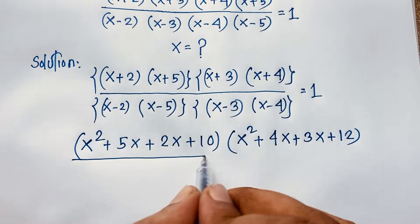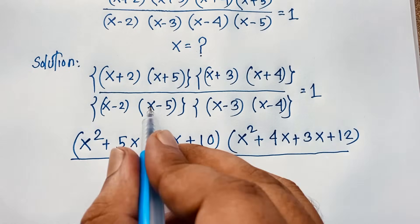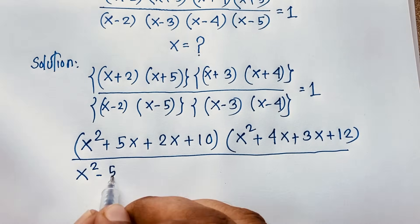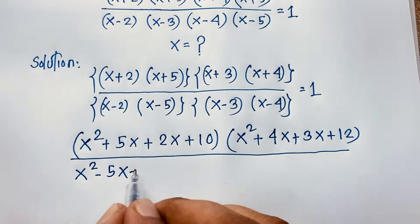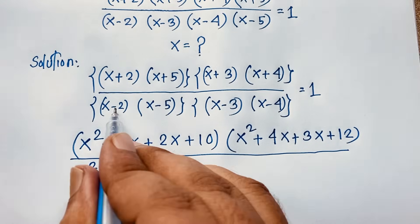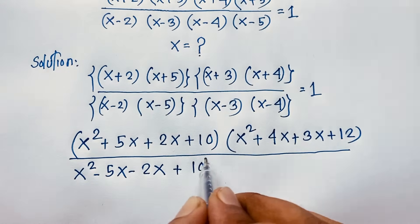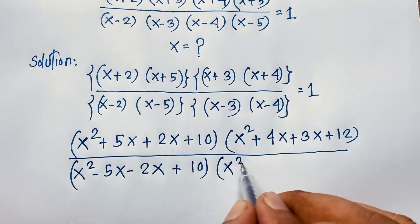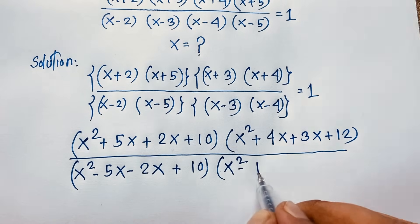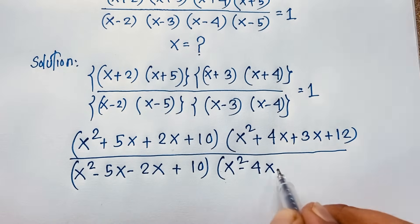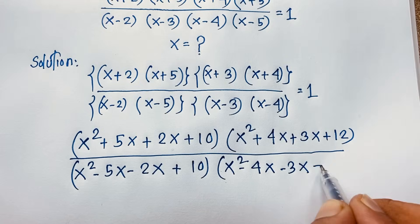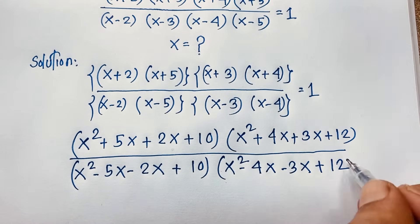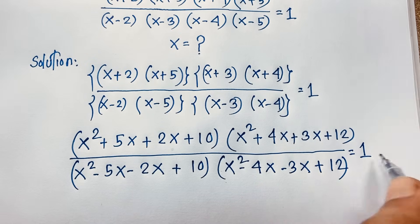In the denominator, (x-2)(x-5): x² minus 5x minus 2x, and minus times minus gives plus 10. Then (x-3)(x-4): x² minus 4x minus 3x, and plus 12 — since minus times minus is plus. Equals 1.